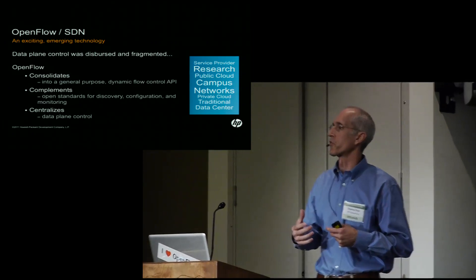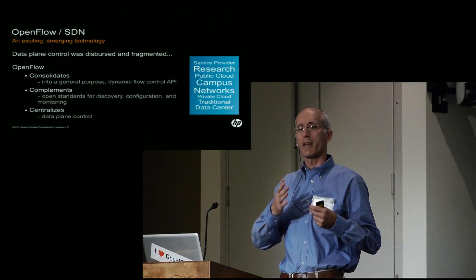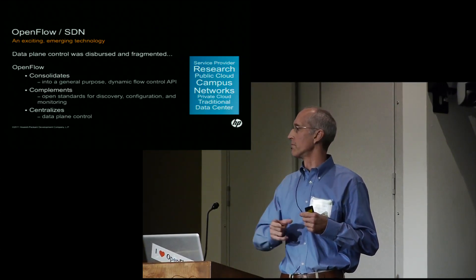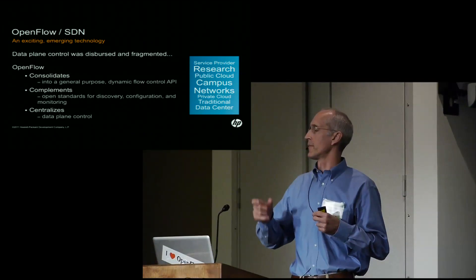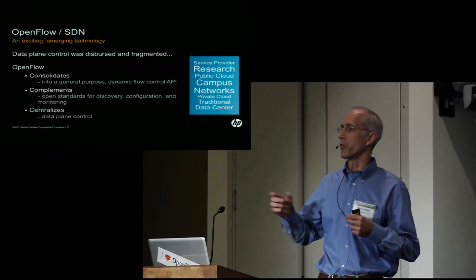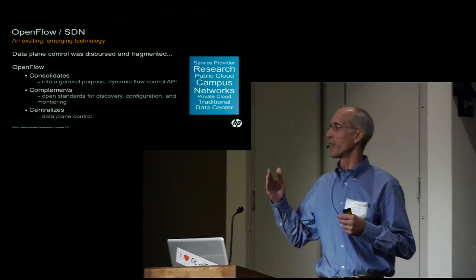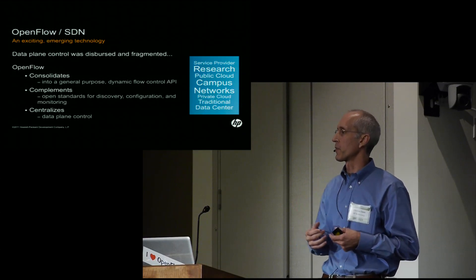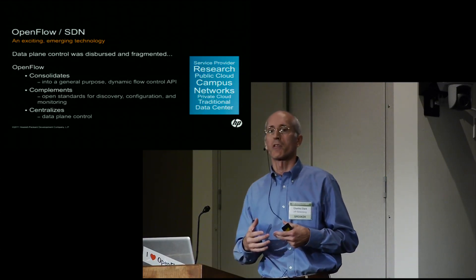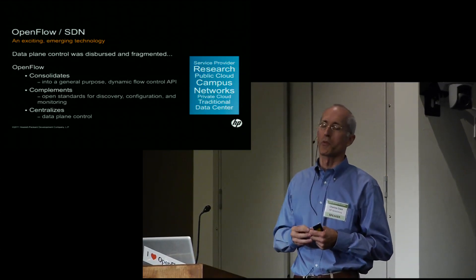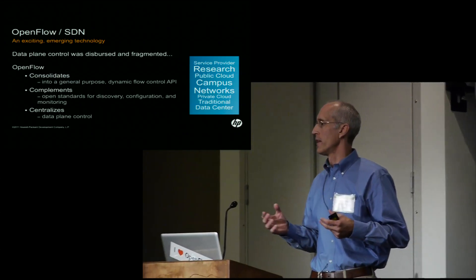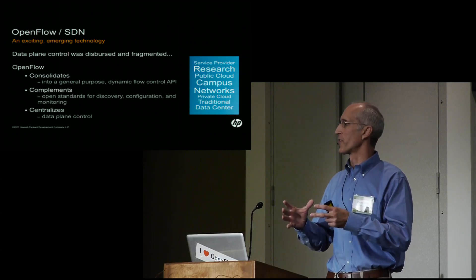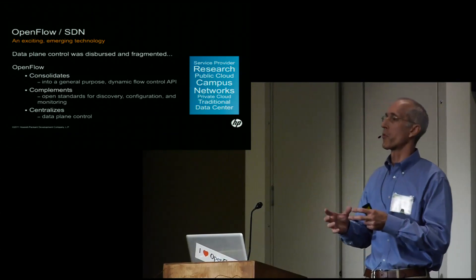It was dispersed in the sense that we had many different control planes operating on the network at the same time. We had bridging, forwarding, ACLs, and you can keep on going through the list — multicasts and so on — all of these separate control planes operating on the network. It was dispersed also in the sense that most of these protocols were implemented as distributed protocols, so you'd find only a portion of that protocol at any given device in the network.